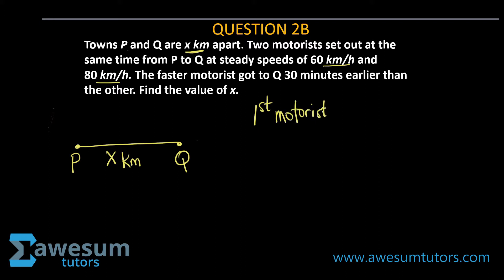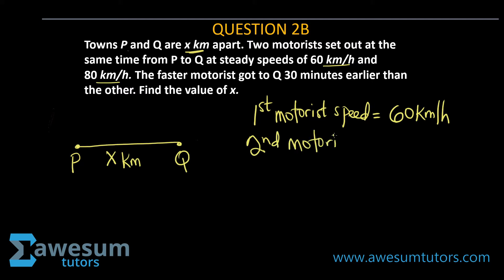First motorist speed is 60 kilometers per hour. Second motorist speed is 80 kilometers per hour. Now the faster motorist got to Q 30 minutes earlier than the other, and we want to find x.